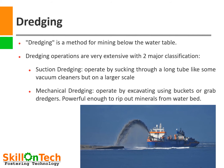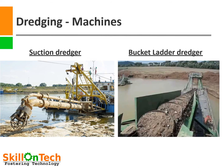Suction dredging operates by sucking through a long tube, like a vacuum cleaner but on a very large scale. Mechanical dredging operates by excavating using buckets or grab dredgers. Both can be equipped with powerful cutters which can rip out minerals from the water bed. Here you can see a suction dredger in the left photo and a mechanical dredger in the right photo. In the suction dredger, the drag head can be seen, from which the mineral is pneumatically transported from the river bed to the boat. In the right photo, a bucket ladder arrangement is shown, transporting material from the bed to the collector.